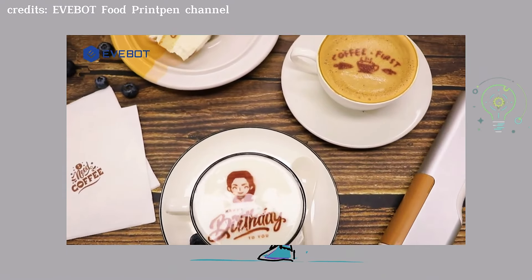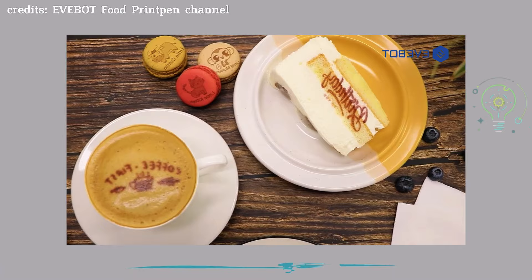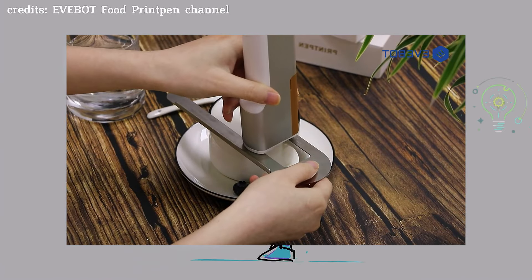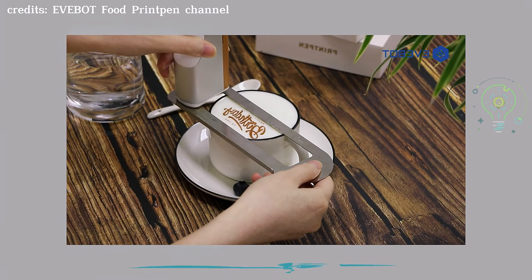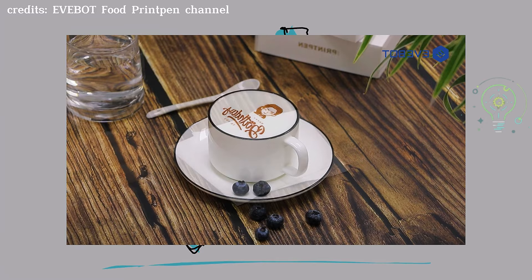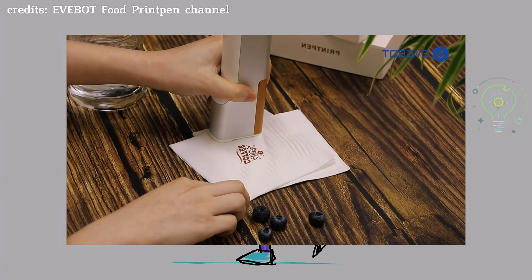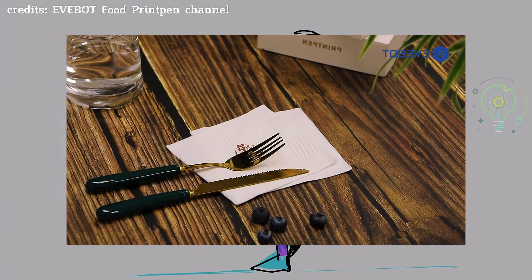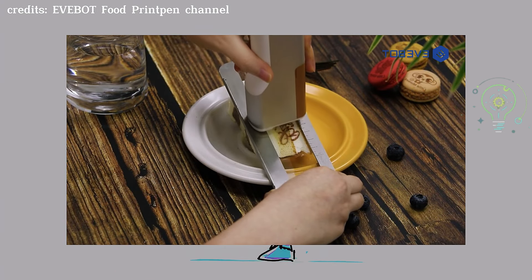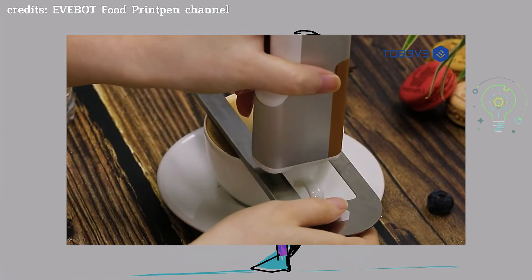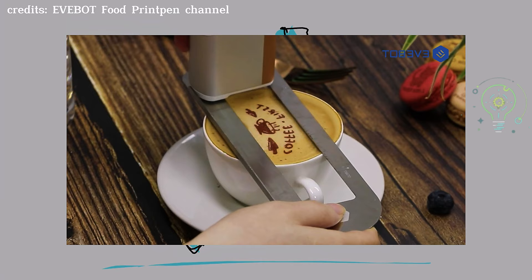Number 13: EveBot Food Print Pen. This gadget is for anyone who loves to personalize everything, even their food. The EveBot Food Print Pen is a pen that prints edible designs on foods like cakes, bread, cookies and even coffee. It works as a portable printer and uses edible ink that doesn't change the flavor of the food. Ideal for bakers, coffee shops, or anyone wanting to add a unique personal touch to food decor. Super handy, the Print Pen is portable and easy to use, letting you personalize dishes quickly and in a fun way.